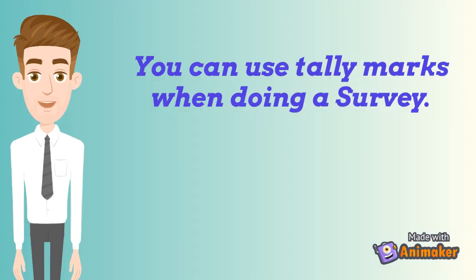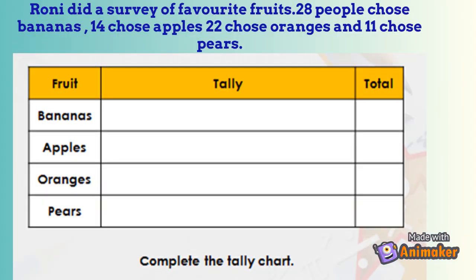Numbers 1 to 10 can be represented by tally marks in this way. You can use tally marks when doing a survey. Roni did a survey of favorite fruits. 28 people chose bananas, 14 chose apples, 22 chose oranges, and 11 chose pears.